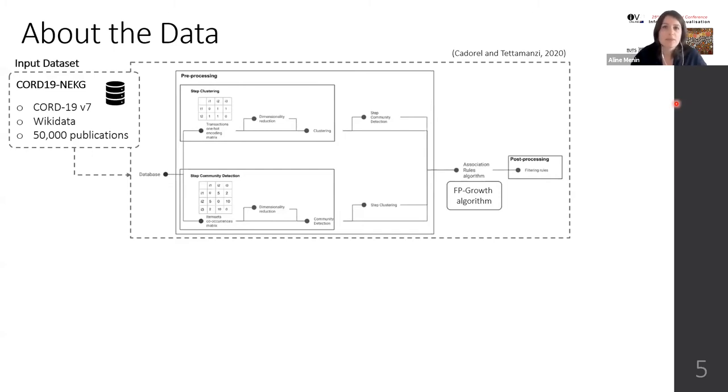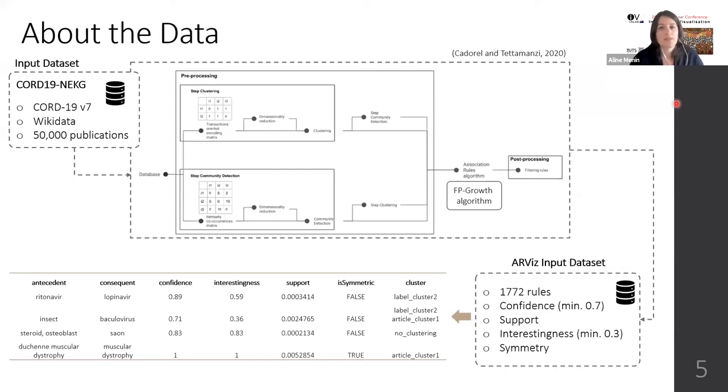These resulting sets of rules undergo a filtering process based on redundancy, minimal confidence, and interestingness. After the filtering, we have a set of 772 rules represented in a tabular manner, where rows represent the rules and columns represent the antecedent and consequent item sets, the measures of interest, and the cluster to which the rule belongs.